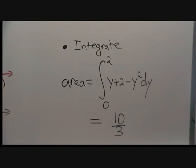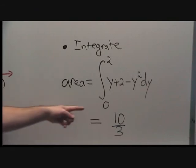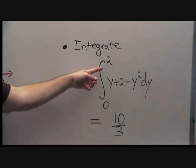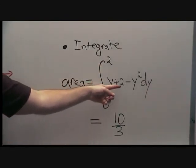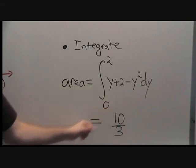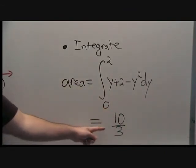Finally, we set up an integral to compute our area. It was given by the integral from 0 to 2 of y plus 2 minus y squared dy. The final answer was 10 thirds.